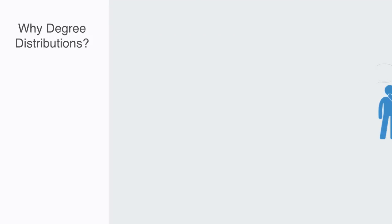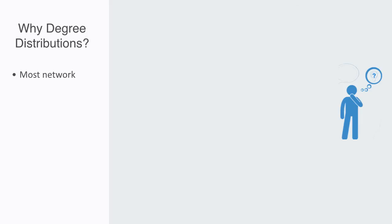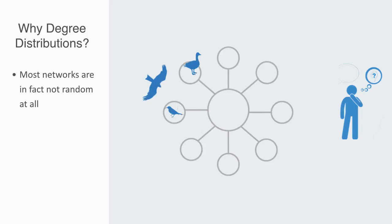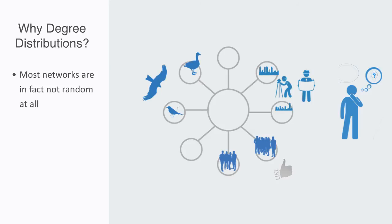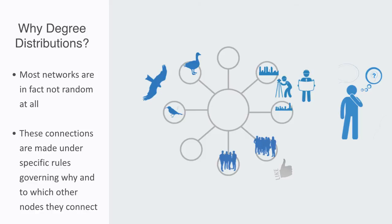We might ask why we get these different networks with fundamentally different degree distributions. The answer to this should become apparent during the next few lectures. By starting with random networks, we will be able to see that most networks are in fact not random at all. Birds in an ecosystem don't just choose at random what other creatures they're going to prey on, just as people don't randomly choose their friends, and transport authorities don't just randomly lay down highways between any two locations. These connections are of course made under specific rules that govern why and to which other nodes any node will make a connection.